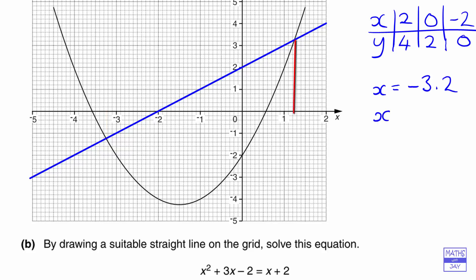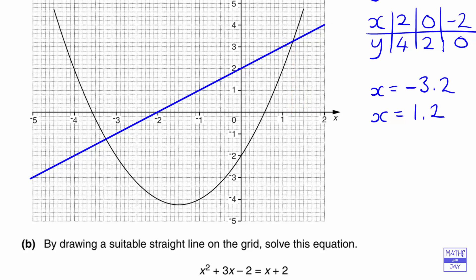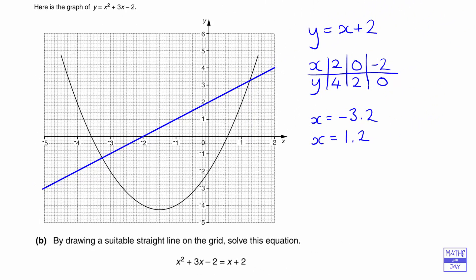And the right hand one, x is about 1.2. So as in the first part of this question, the answers are not exact answers. These are just the best we can do. These are approximations from looking at the graphs.